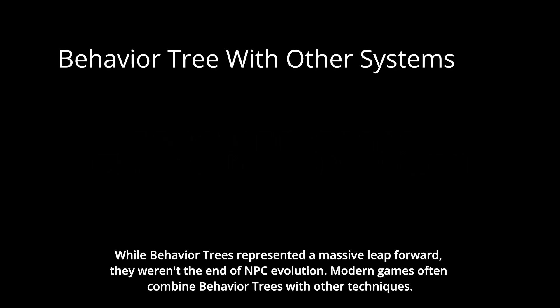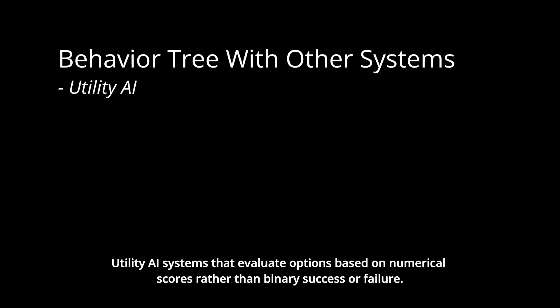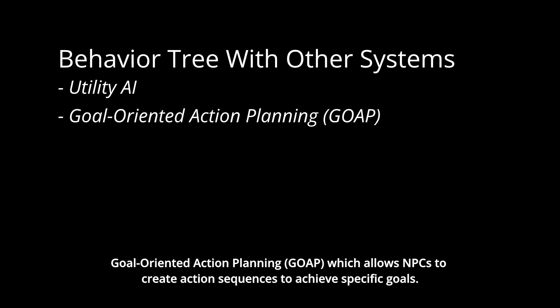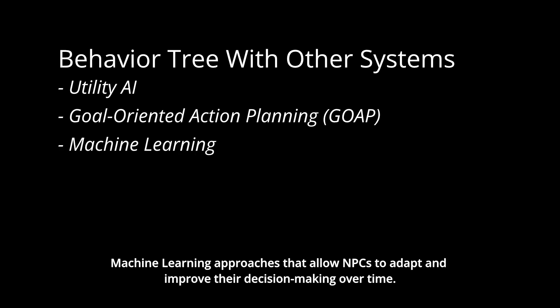While behavior trees represented a massive leap forward, they weren't the end of NPC evolution. Modern games often combine behavior trees with other techniques: utility AI systems that evaluate options based on numerical scores rather than binary success or failure; goal-oriented action planning (GOAP), which allows NPCs to create action sequences to achieve specific goals; and machine learning approaches that allow NPCs to adapt and improve their decision-making over time.